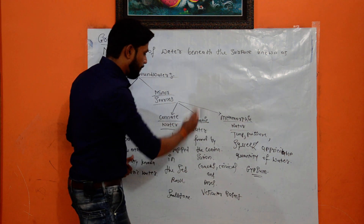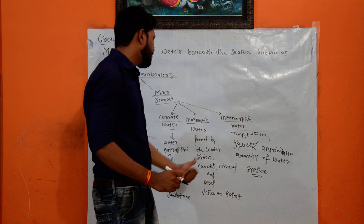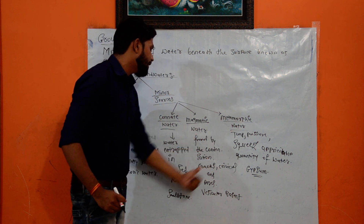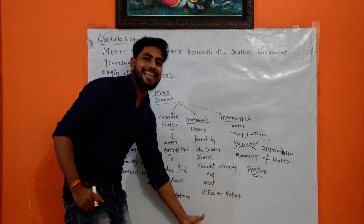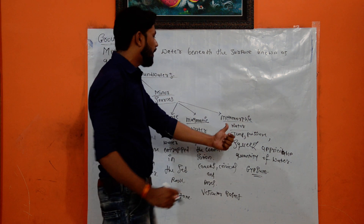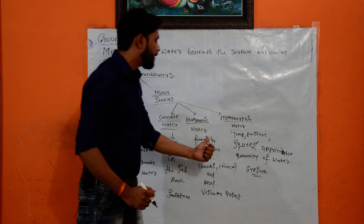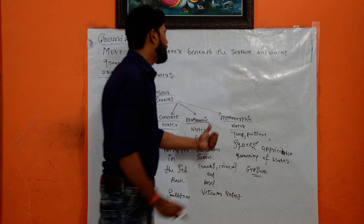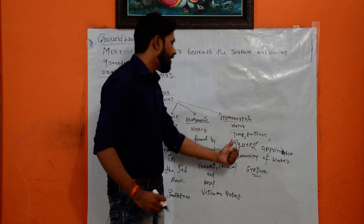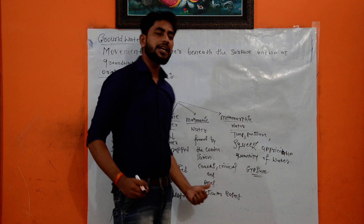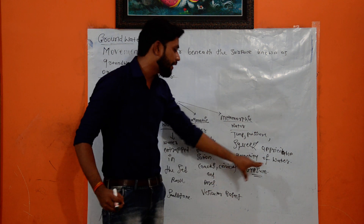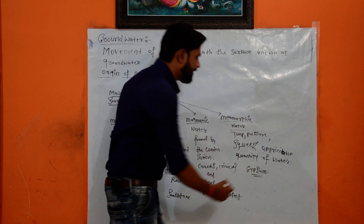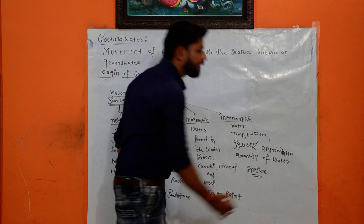In magmatic water, the water is formed by condensation and entrapped in the cracks, crevices, and pores — example: vesicular basalt. The metamorphic water is formed under temperature and pressure, and it squeezes an appreciable quantity of water, known as metamorphic water, and the example for that is gypsum.